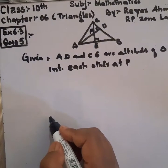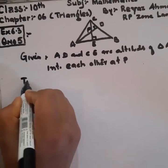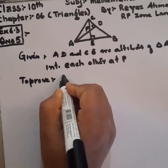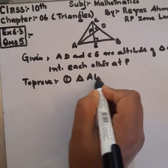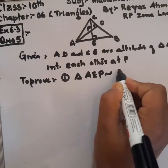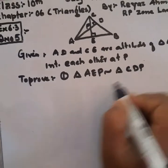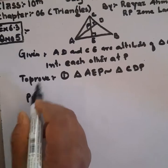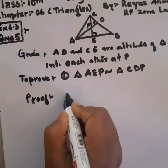We need to prove, we need to show that one by one. First part: triangle AEP is similar to triangle CDP. Let's do it, let's find its proof.